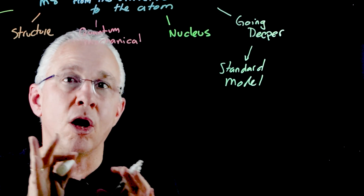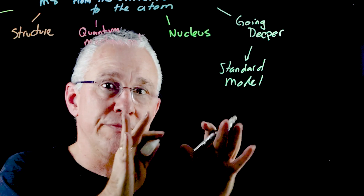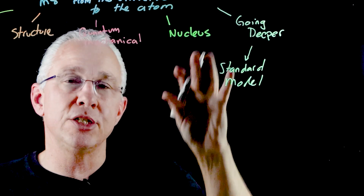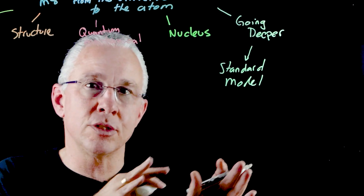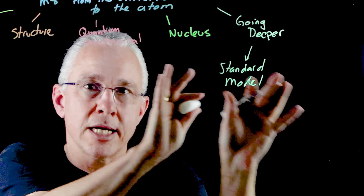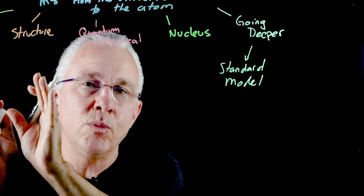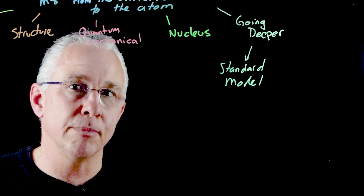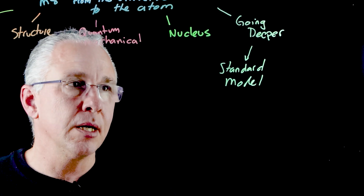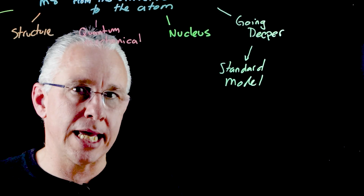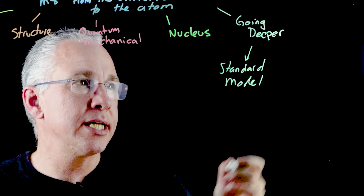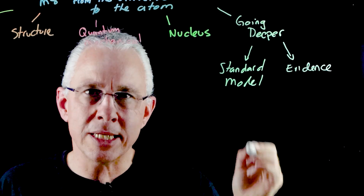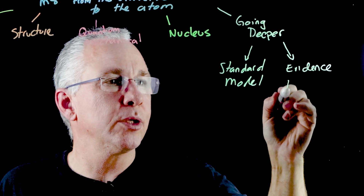The standard model is a combination of all the work that led up to it previously. In my teaching, I actually teach this first so students understand the current model, and then we look at the historical development that led to it. Apart from looking at the standard model itself, we also look at the evidence for it — in particular, particle accelerators.